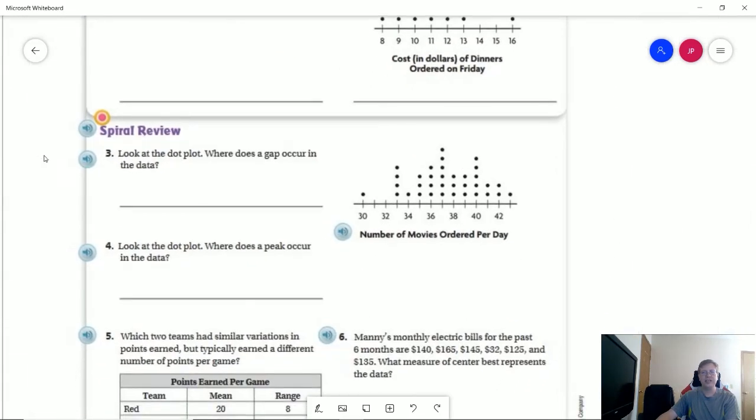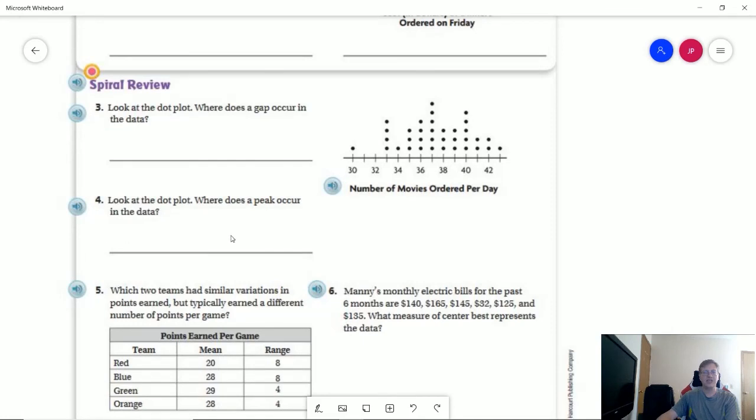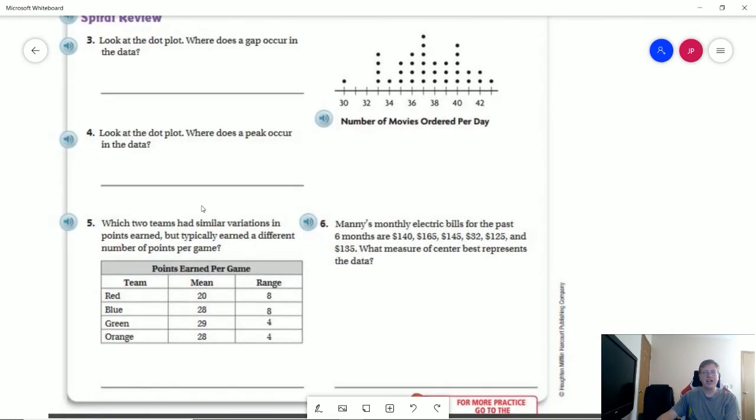Number three, the gap - you're going to be looking for a specific range between this number and this number. The peak is going to be a specific point. Number five, this goes back to our last lesson where we're looking at two different teams that had similar variation. We're looking at the range and then had a different number of points per game. What we're looking for is the most drastic difference. And then finally, number six...